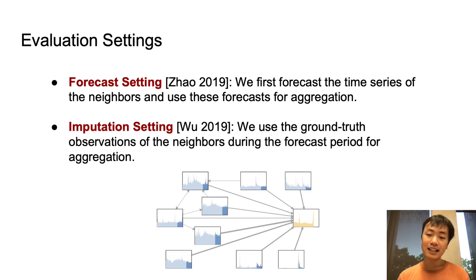In the second setting, which we call the imputation setting, we run the node aggregation on the ground truth observations of the neighbors during the forecast period. These are the dark blue regions in the diagram. This setting is useful when we would like to fill in missing values or to study how influence propagates through a network. So our paper is the first to clearly define these two tasks, whereas previous works implicitly picked one task and evaluated on it without having a clear definition.